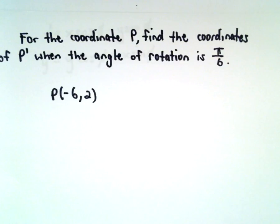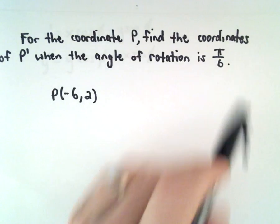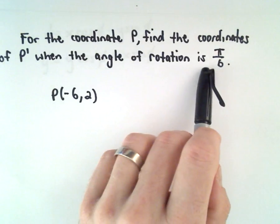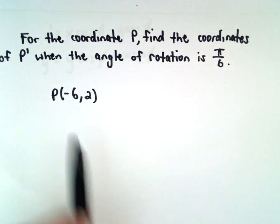For the coordinate P, we're going to find the coordinates of P' when the angle of rotation is π/6. This is rotated counterclockwise about the origin.